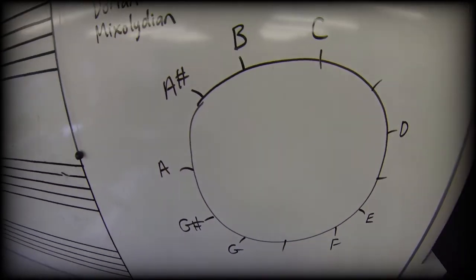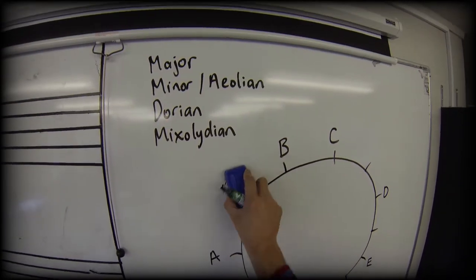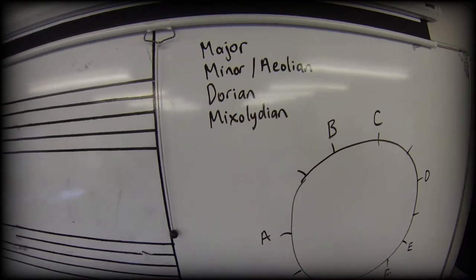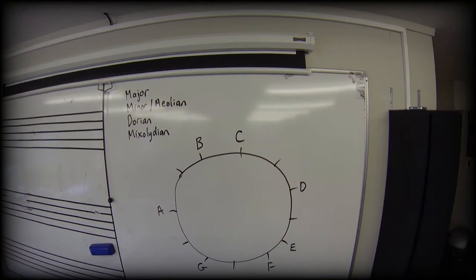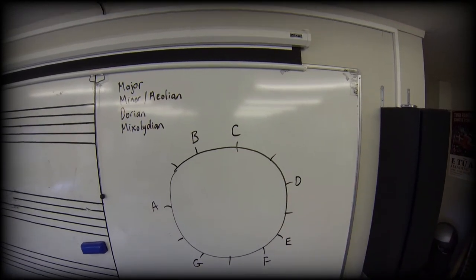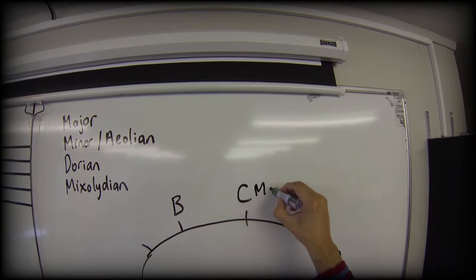So now instead of showing all the available semitones, this chromatic clock shows a C major scale.